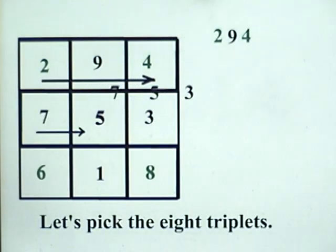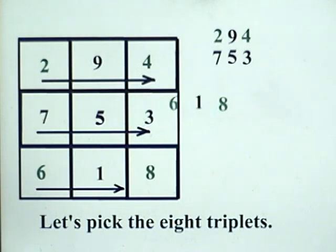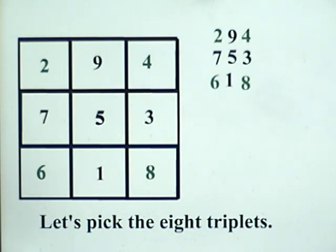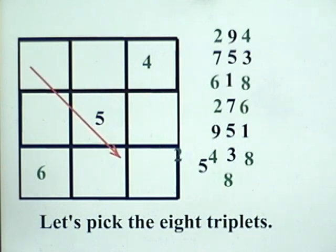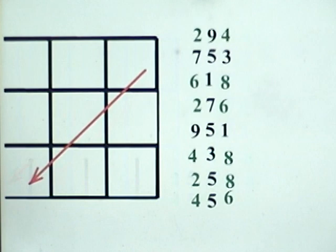Now, we go to step two, where we find the triplets. First in the rows, then the three columns, and then finally the two diagonals.